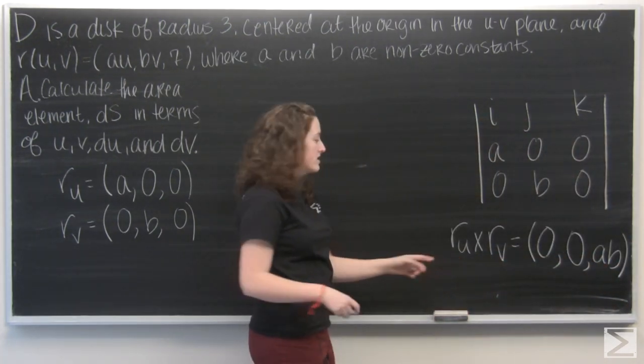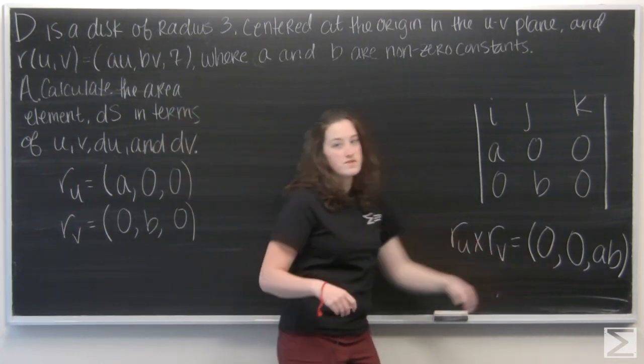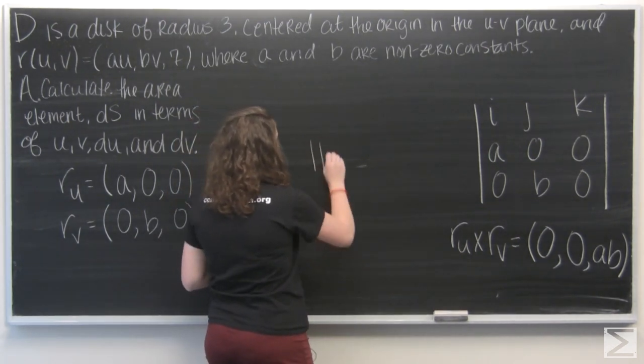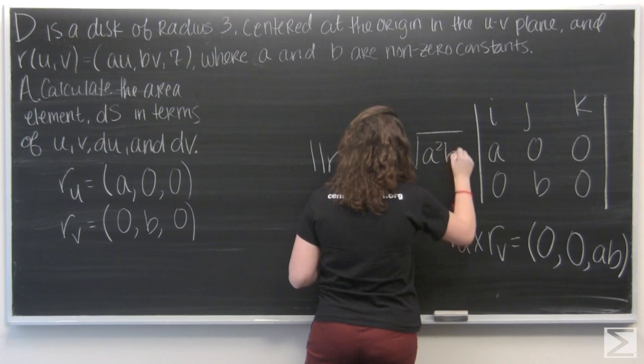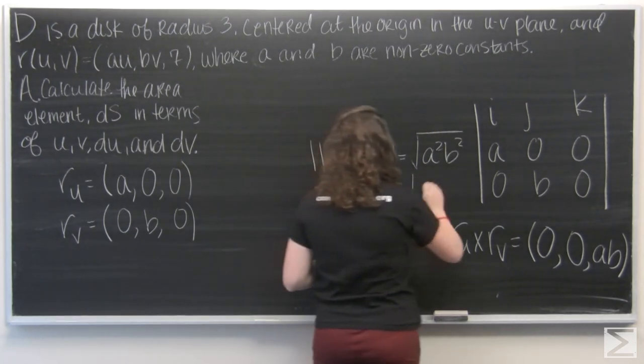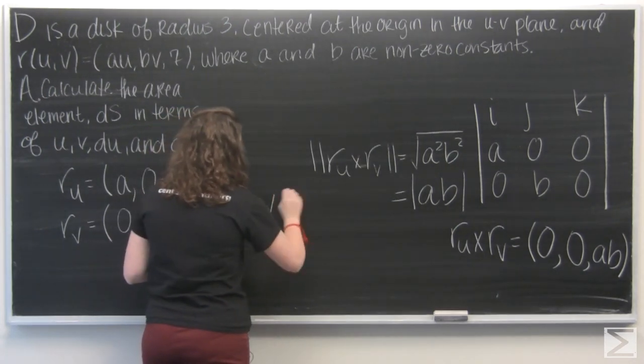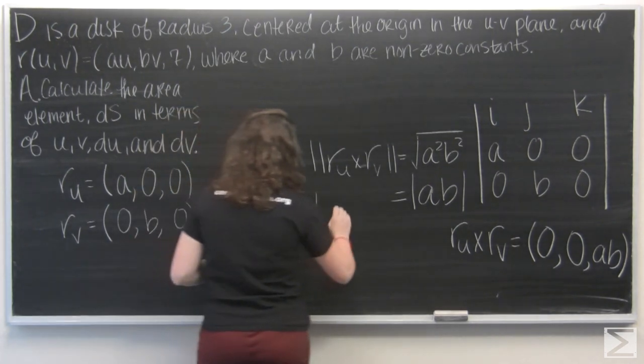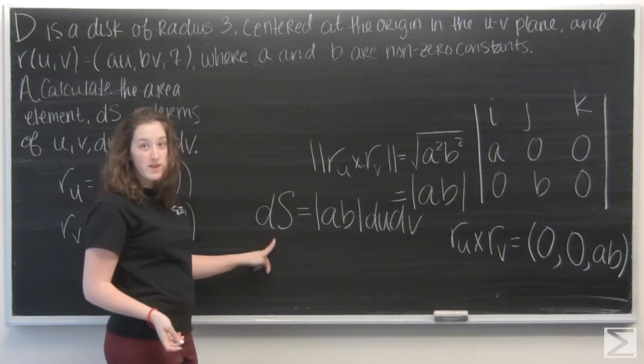Now I need to take the magnitude of this vector. So, remember it's kind of like the distance formula. So I'm going to have the square root of each of the terms squared, which ends up just being the square root of a squared b squared, which is just the absolute value of a times b. So our area element ds is going to be that magnitude times du and dv. So that's my answer for part a.